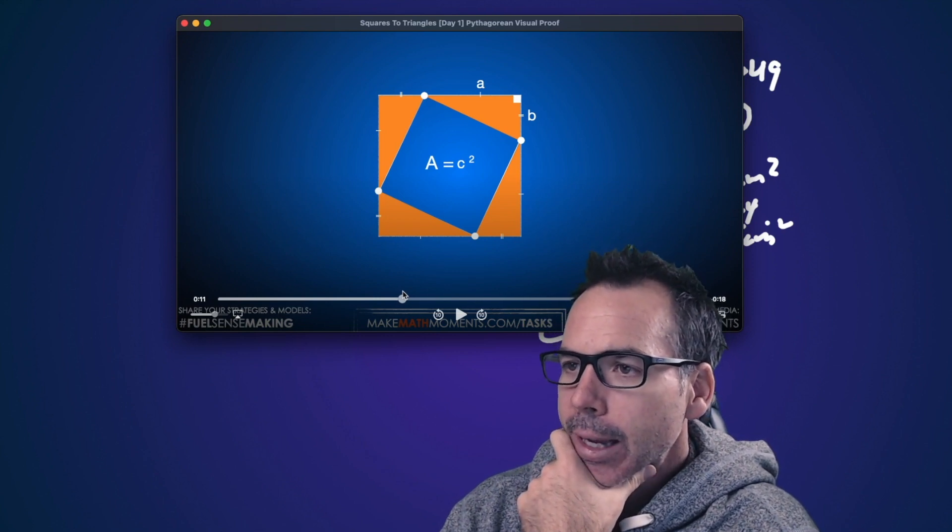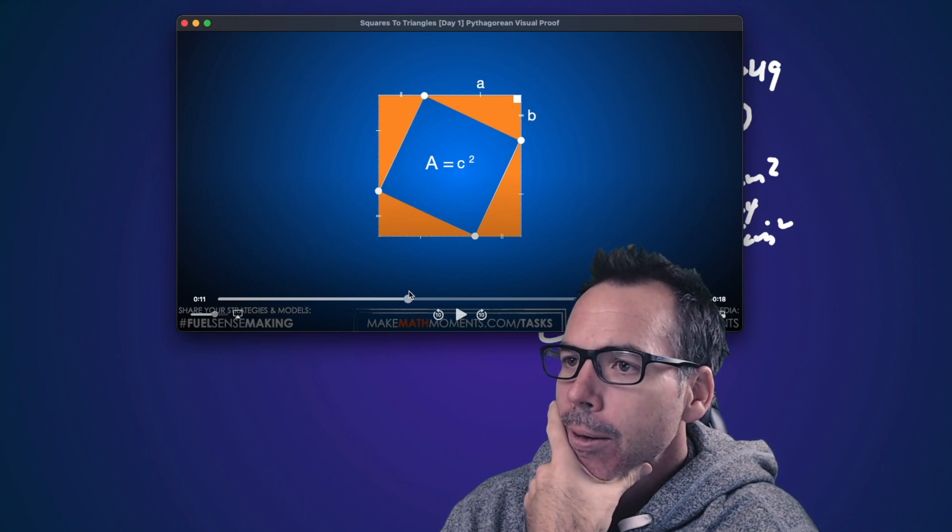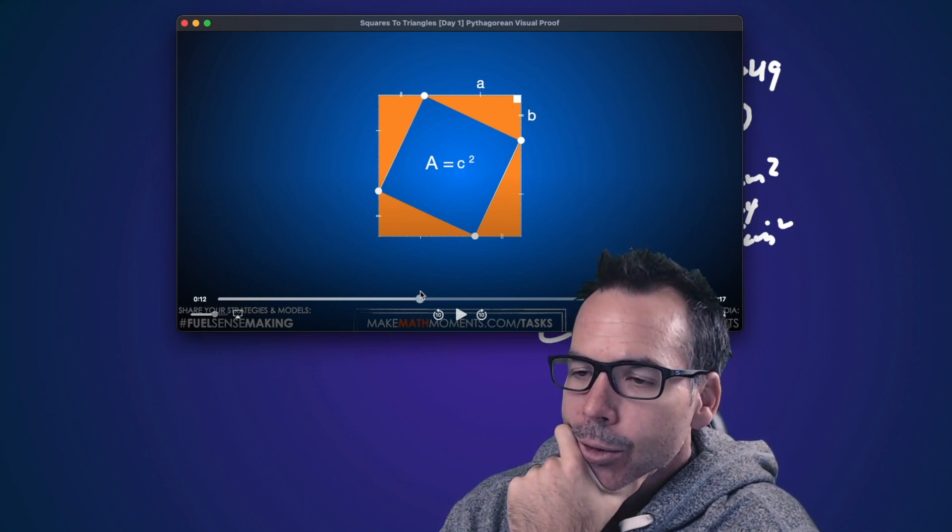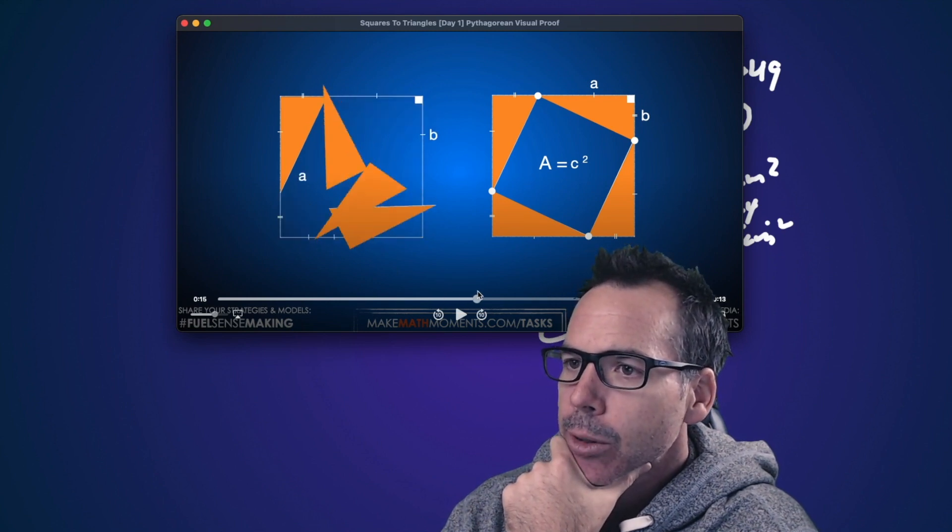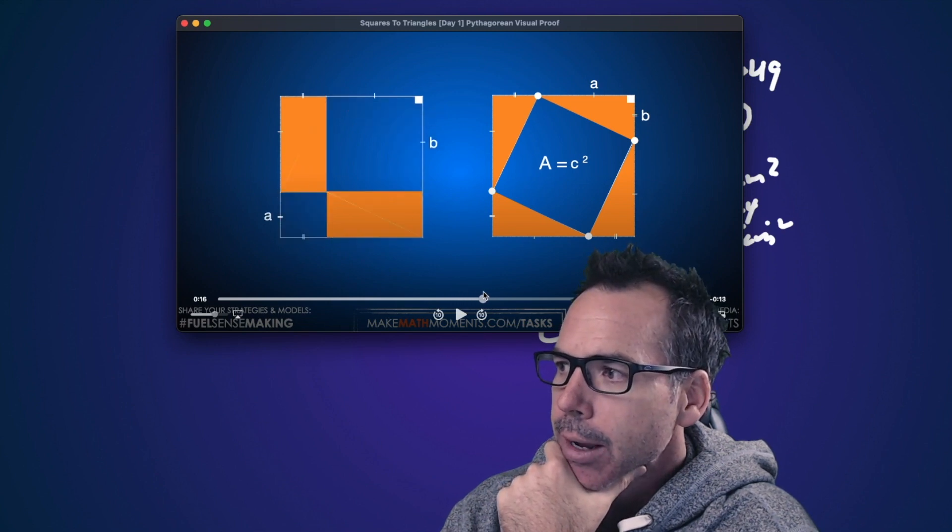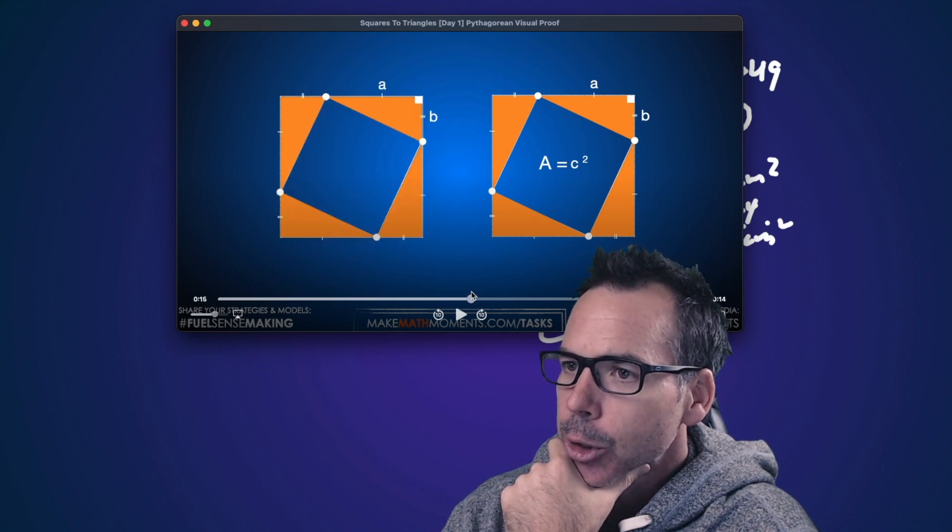So in this case, if we label the hypotenuse C, and then all of a sudden we have the area of the big square is C squared. And then we label the other two's A's and B's, the other two sides of the triangles A and B, we can see that if we rearrange those triangles, we could just take them and then rearrange them. And we create this space, right? The blue space has not changed. The blue space has not changed at all.